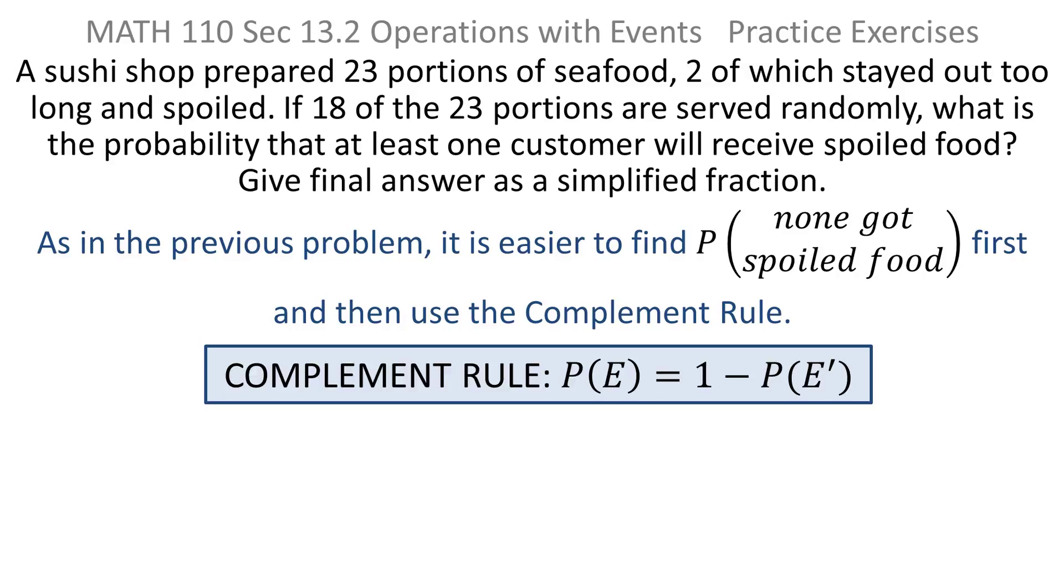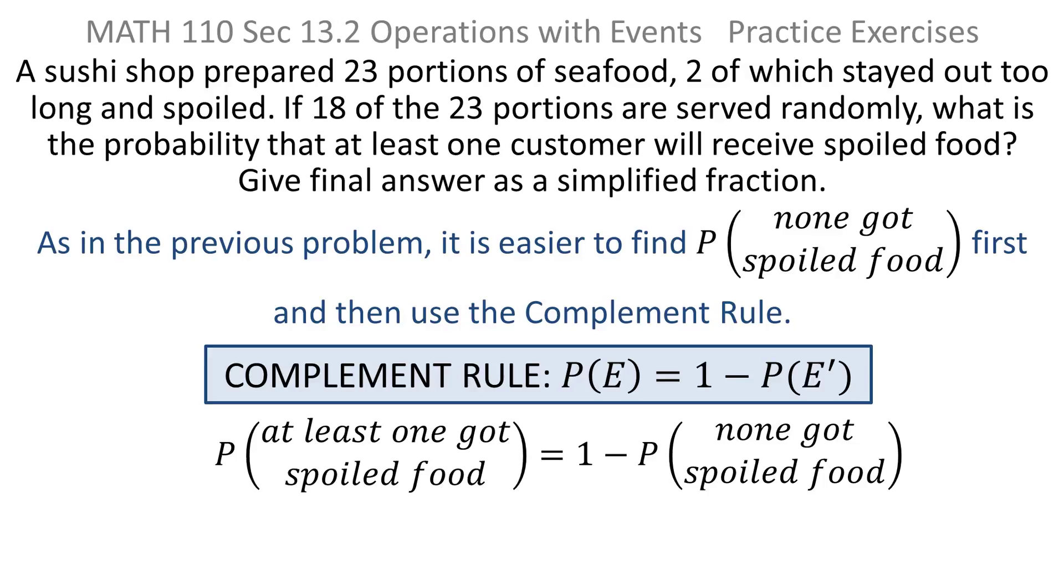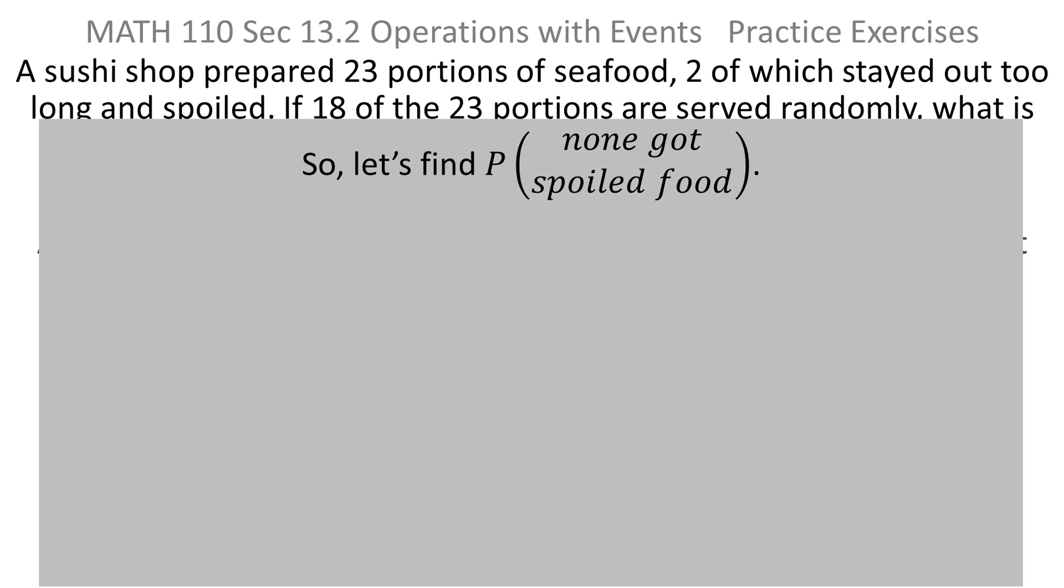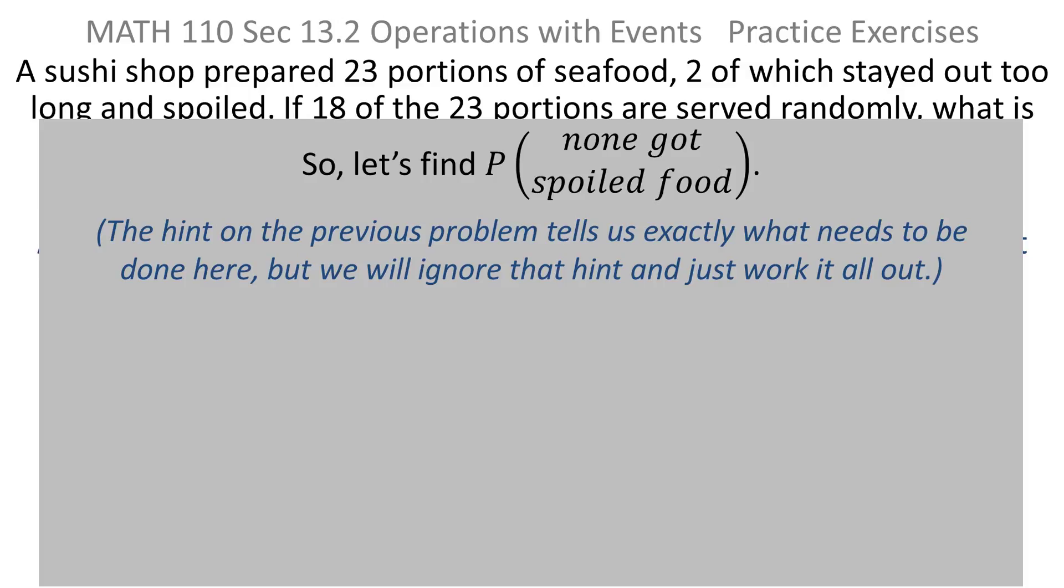The complement rule says the probability of an event is 1 minus the probability the event does not occur. So the probability that at least one person got spoiled food is 1 minus the probability that no one got spoiled food. How do you find the probability that none got spoiled food? The hint on the previous problem sort of told you, here we're not going to take the hint, we're going to calculate it on our own.